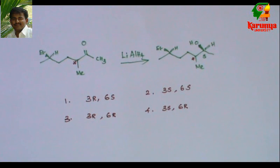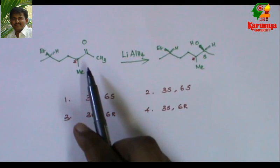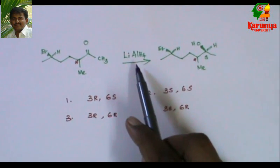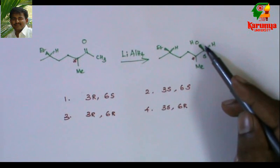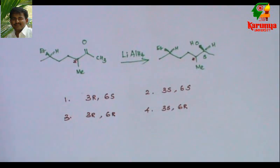Today I am going to solve a problem on stereoselectivity using Cram's rule. You can find this problem in CSIR NET exam 2014 December. When this keto is reduced with lithium aluminum hydride, it gives corresponding alcohol with S stereochemistry.